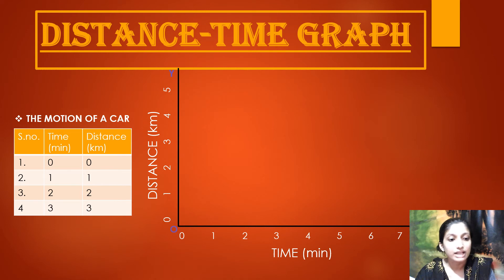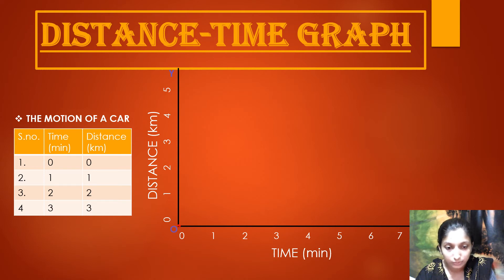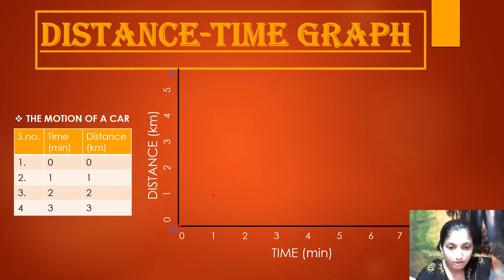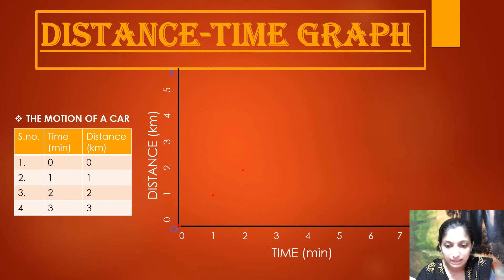Now let us draw the graph. At zero time and zero distance, we mark the origin. When time is 1 and distance is 1, we mark that point. When time is 2 and distance is 2, we mark that point as well. Then time 3 and distance 3 gives the next point. You should use a ruler and scale so the points come out accurately.